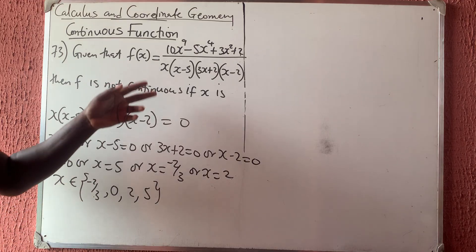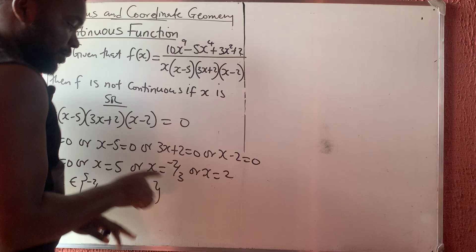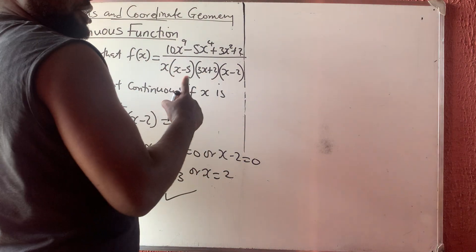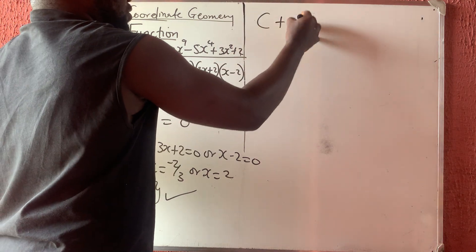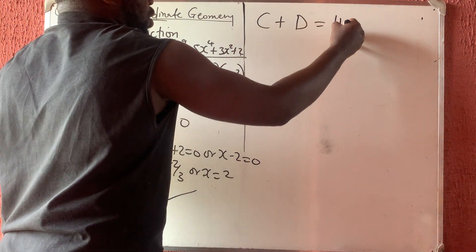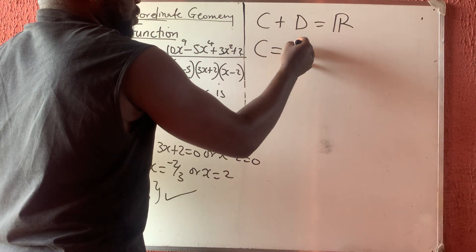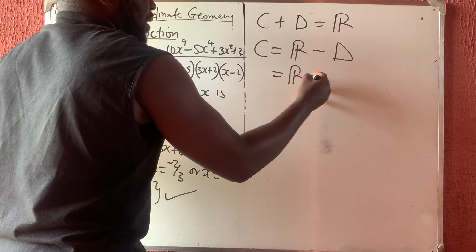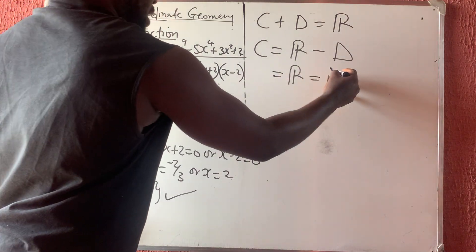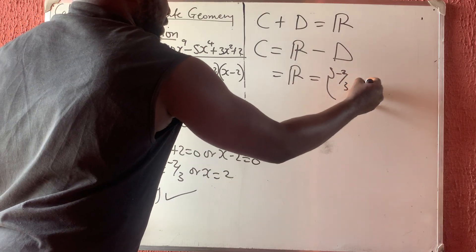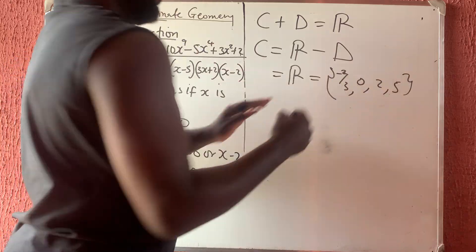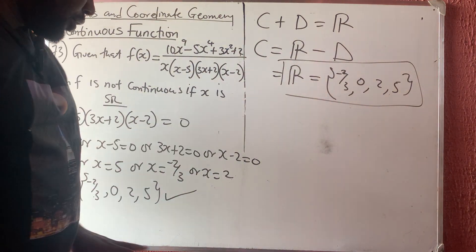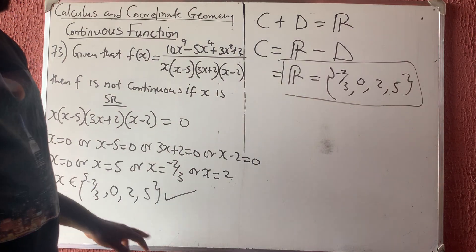So x is an element of {-2/3, 0, 2, 5} — any of these should be in your options, so choose the one that matches. If asked to find where it is continuous, use: continuous = all real numbers minus {-2/3, 0, 2, 5}.